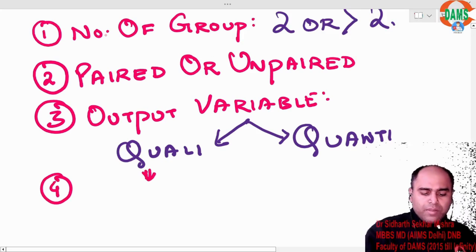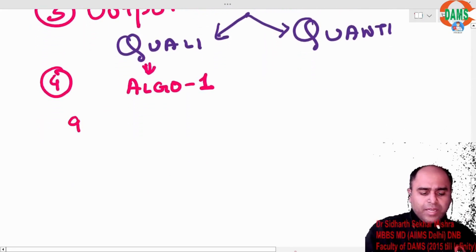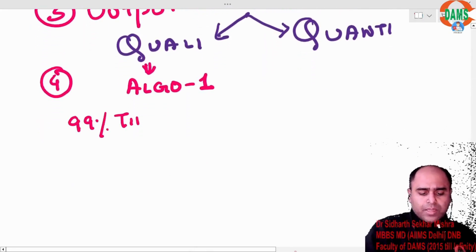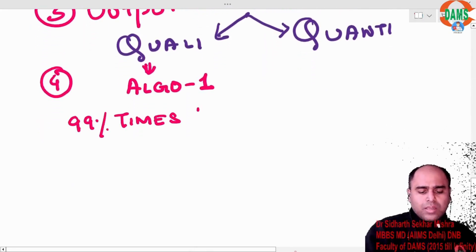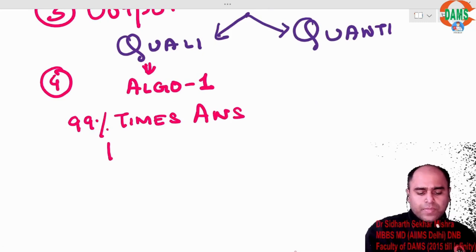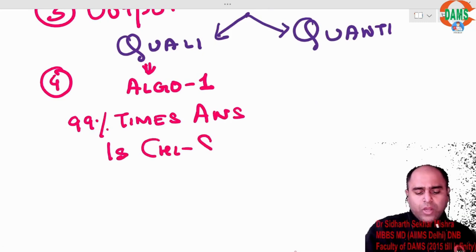For quali, we have algorithm number 1. 99 percent times answer is chi-square. So there is nothing at all else to think.